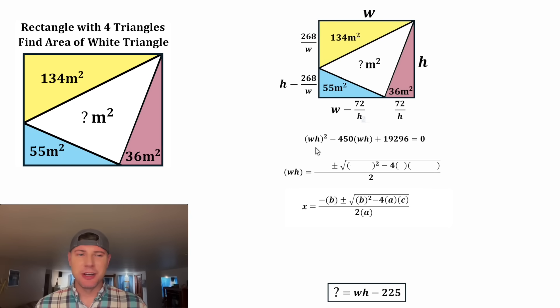For our problem, x is equal to WH, a is equal to 1, b is equal to negative 450, and c is equal to 19,296. Negative 450 squared is equal to 202,500 minus 4 times 1 times 19,296, which is equal to 77,184. And then on bottom, 2 times 1 is equal to 2.